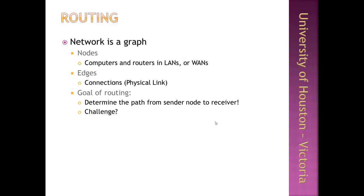Now that we talked about the network technology, the OSI model, and different modes of communications, let's talk about one of the important components of networking technology called routing. You can view the network as a graph of interconnected nodes, where each edge between two nodes can be interpreted as a physical link — wired or wireless. Nodes on a LAN or wide area network can be computers, routers, or switches. The goal of routing is to determine a path from the source node to the destination node through a minimal number of intermediary nodes to deliver the information packet.